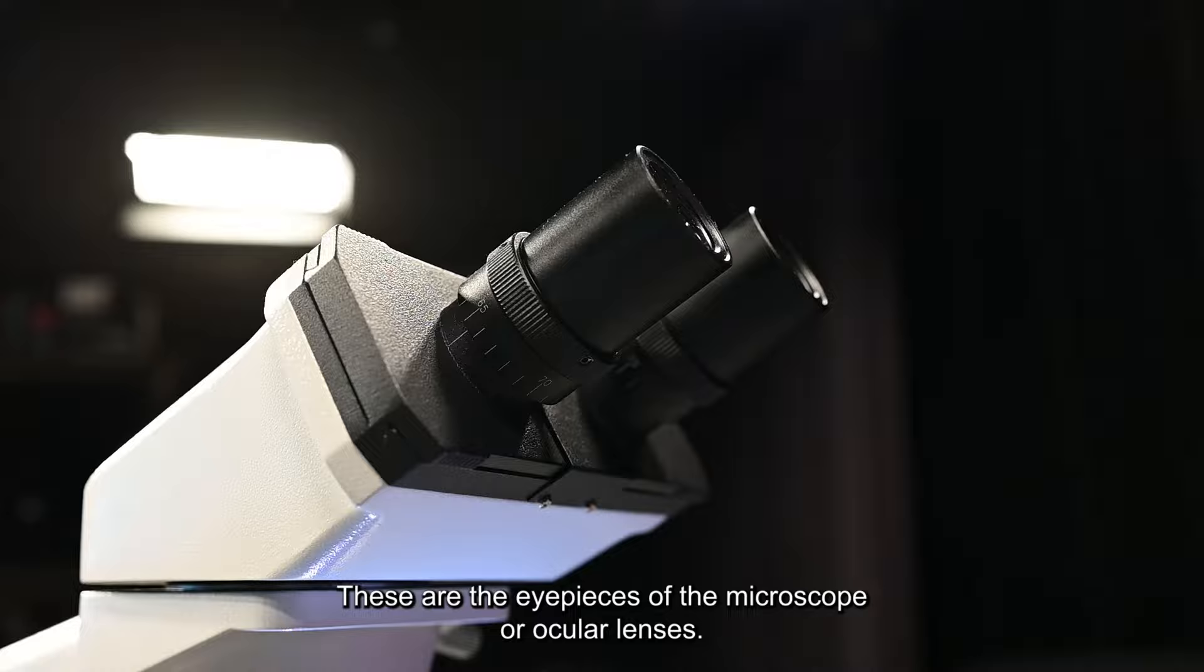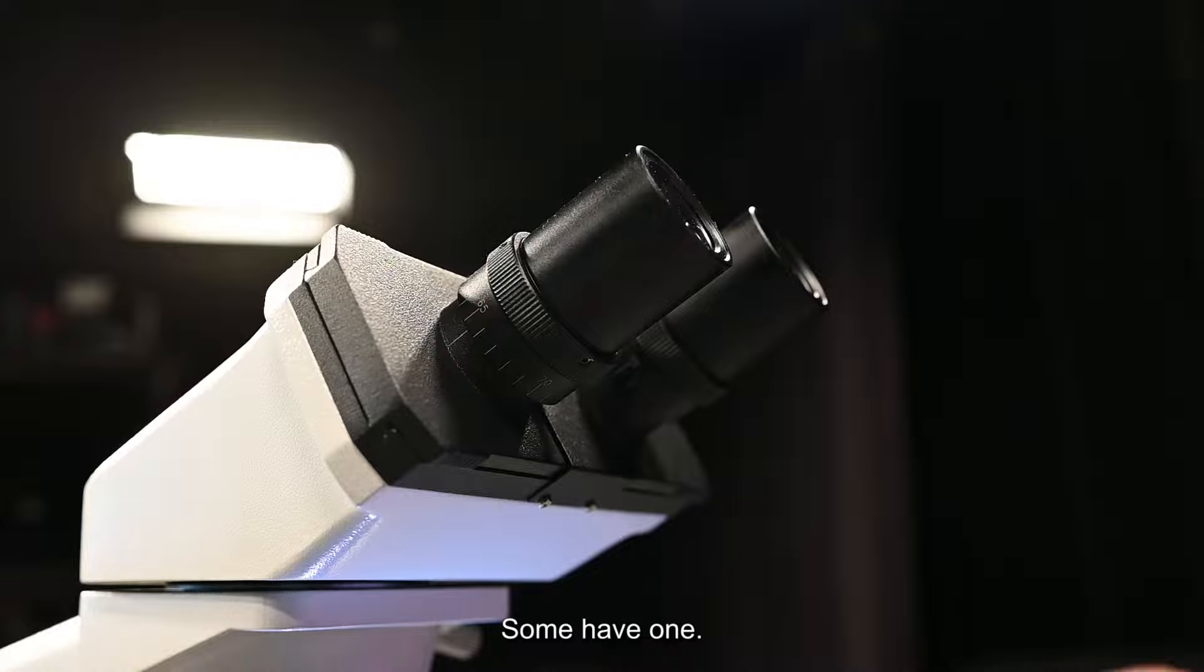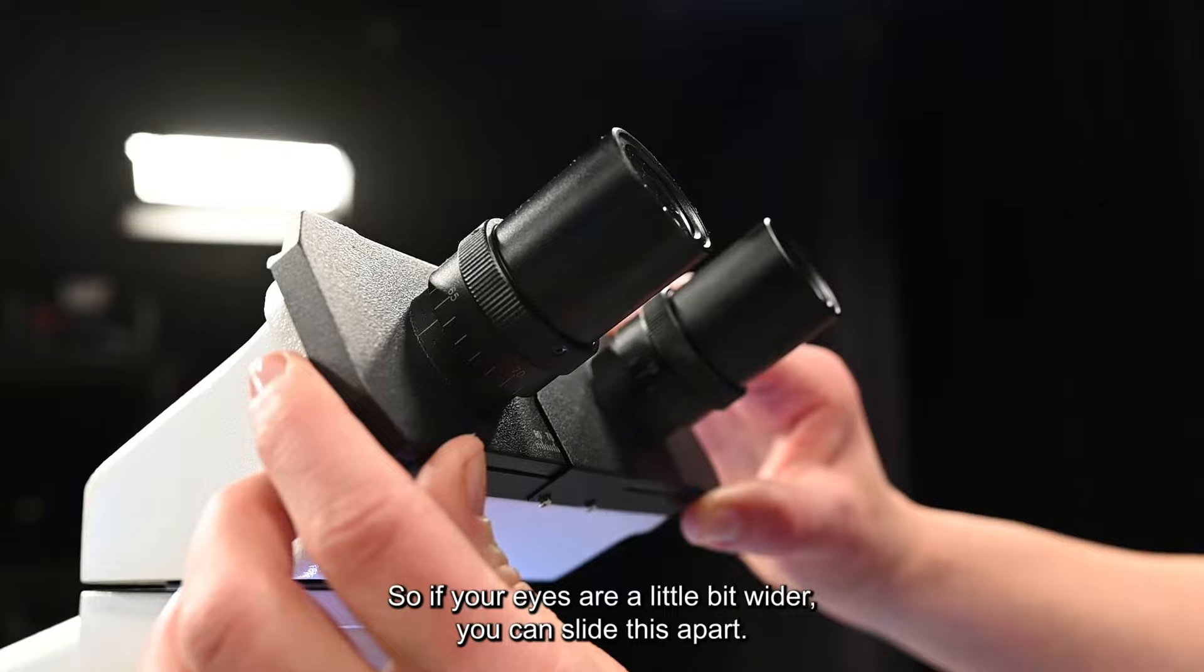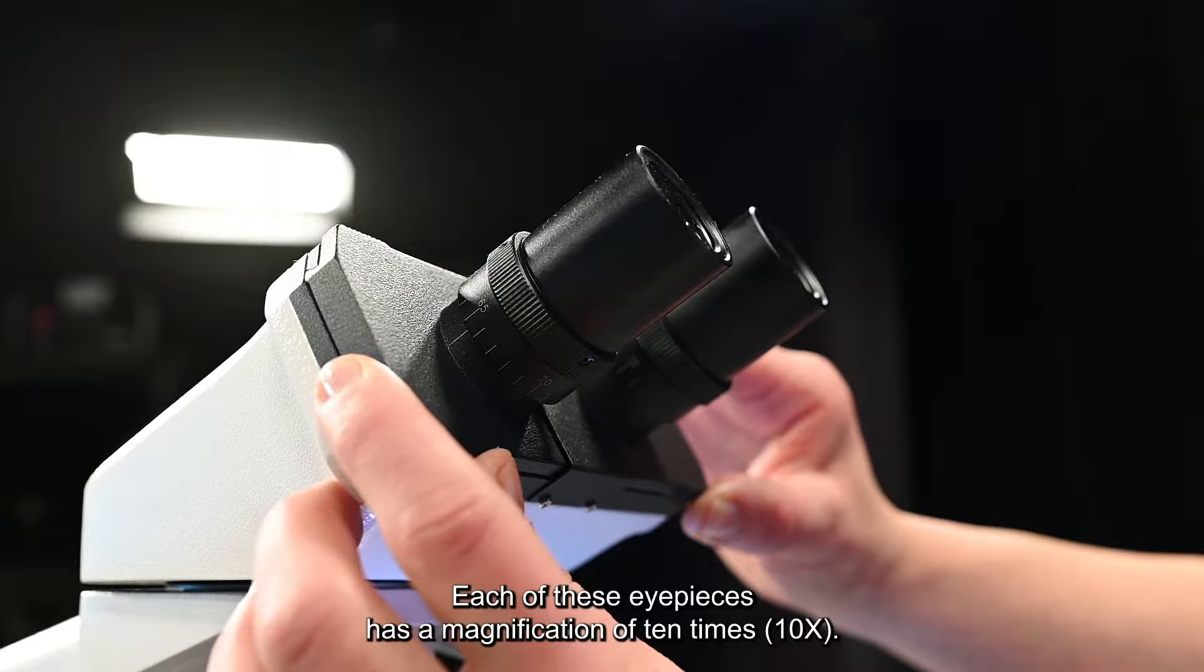These are the eyepieces of the microscope or ocular lenses. This microscope has two. Some have one. It's designed for you to look with two eyes. If your eyes are a little bit wider you can slide this apart. If they're a little bit closer together you can slide it inward.